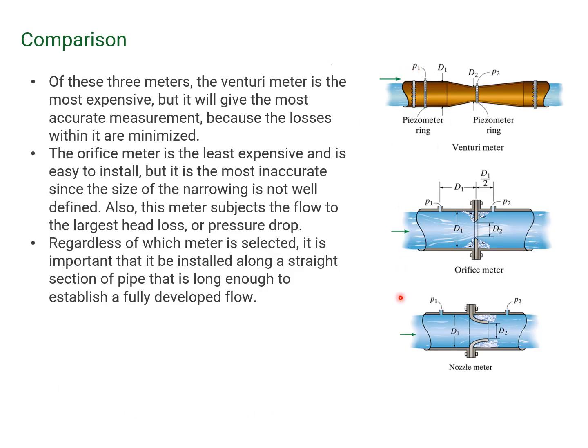Of these three basic meter types, which one is the best? The Venturi meter is the most accurate because losses within it are minimized. The orifice meter is the least expensive and it's very easy to install, but it's also the most inaccurate.